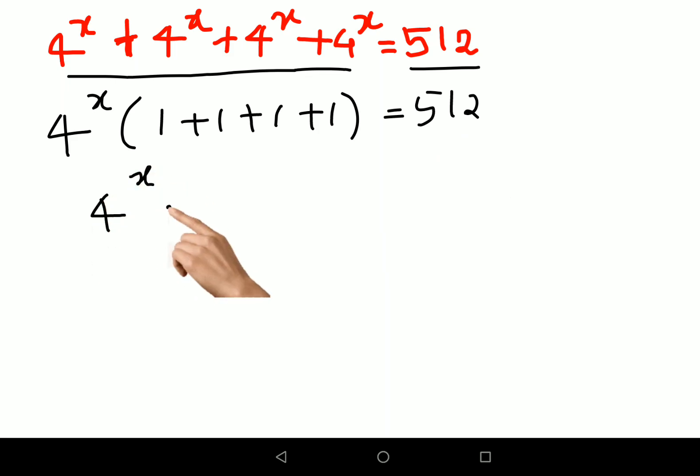Then what we can write is 4^x · 4 = 512. Now what I can do is keep 4^x on this side and divide both sides by 4.